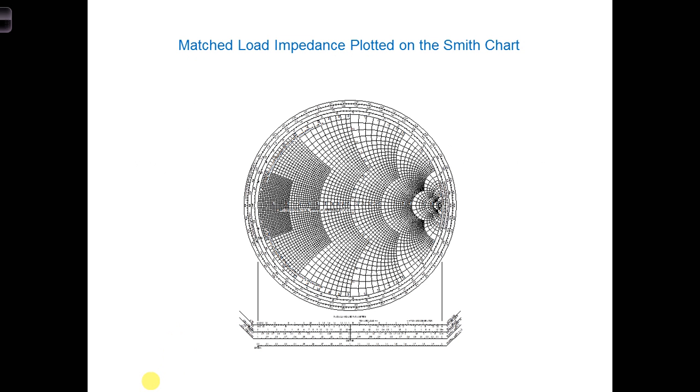Let's first consider the reflection coefficient. And let's consider the easiest case first, a reflection coefficient of zero. What is the load impedance if the reflection coefficient is zero? And where would we plot that impedance on the Smith chart?